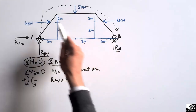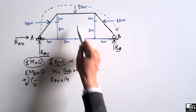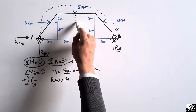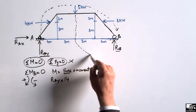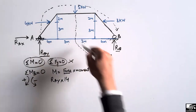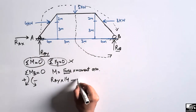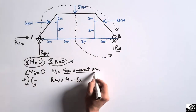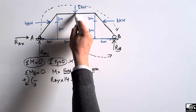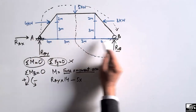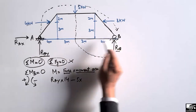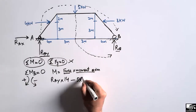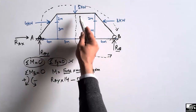The 5 kN vertical load also creates a moment about point B. This 5 kN load creates an anti-clockwise moment about point B, so we take it as negative. The moment arm is the horizontal distance from the 5 kN load to point B, which is 3 meters plus 4 meters, giving 7 meters. So the moment contribution is minus 5 kN multiplied by 7 meters.